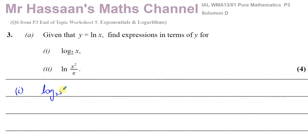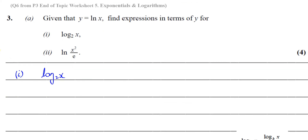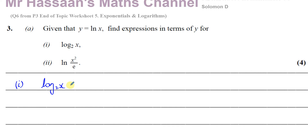Now there are a number of ways I could do this. One of the ways is by using first principles. So I can say this is — let me call it p. Now if I rewrite this in index form, the 2 is the base, the p is the power, and that's going to be equal to x. So 2 to the power of p equals x.